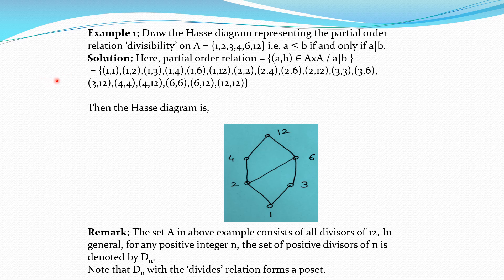As 1 divides every element of A, we write pairs: (1,1), (1,2), (1,3), (1,4), (1,6), (1,12). Then 2 divides 2, 4, 6, 12: pairs (2,2), (2,4), (2,6), (2,12). Then 3 divides 3, 6, 12: pairs (3,3), (3,6), (3,12). Then 4 divides 4 and 12: (4,4), (4,12). Then 6 divides 6 and 12: (6,6), (6,12). And 12 divides 12: (12,12). This is the complete relation defined on set A.